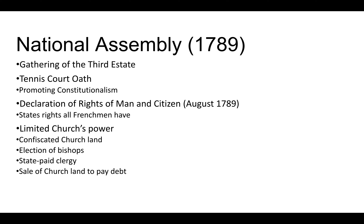This happens in July of 1789. The Bastille was an old prison that had lots of weapons stored in it and prisoners as well. Members of the Third Estate — mobs of people from the cities — storm the Bastille and take control of it, this ancient fortress. A few French soldiers are killed in the melee.